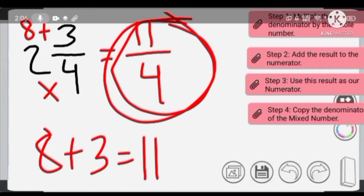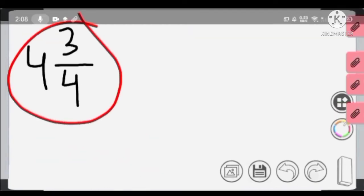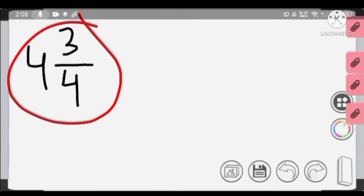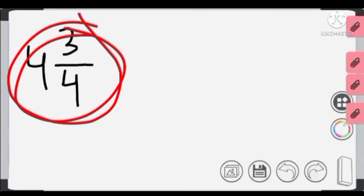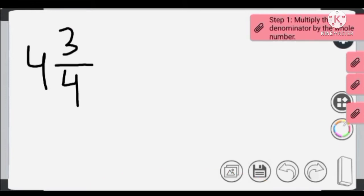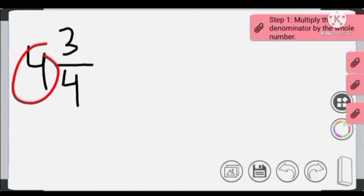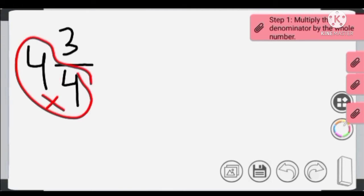If we convert this improper fraction back into a mixed number, we get the same result. Now let's go to our next example. We have another mixed number, and we are going to convert it into an improper fraction using the same steps. Step 1: multiply the denominator by the whole number — both are 4, so we put a multiplication sign between them.